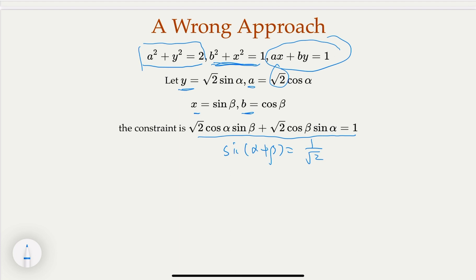Because the square root of 2, and then you're going to find out that the sine alpha plus beta equals 1 over the square root of 2. Alpha plus beta could be 45 degrees, and then you try to maximize x plus y. And then you just plug in with x is sine beta, y is the square root of sin alpha. However, there is an issue with this approach.